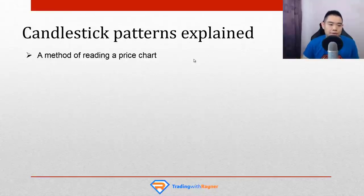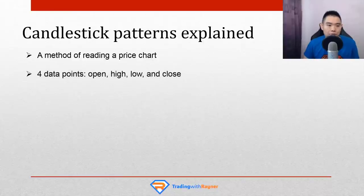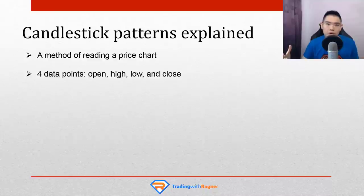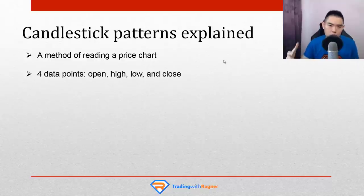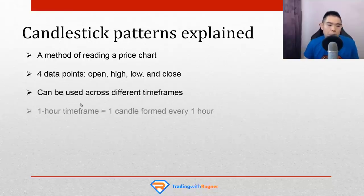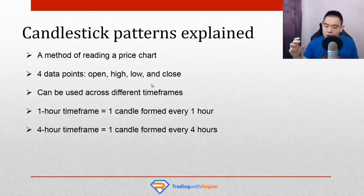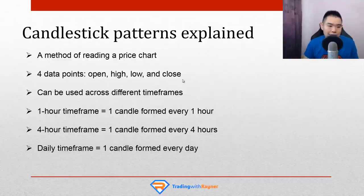How do you actually read a candlestick pattern? One thing to understand is that there are four data points for every candlestick: the opening price, the closing price, and the high and low of the session. If your candlestick is on the one-hour time frame, the high is the highest price point over the last one hour and the low is the lowest price point over the past one hour. You can use candlestick patterns to trade different time frames — on a four-hour frame, a new candle forms every four hours; on a daily frame, one candle forms every single day. Same for the weekly and monthly.